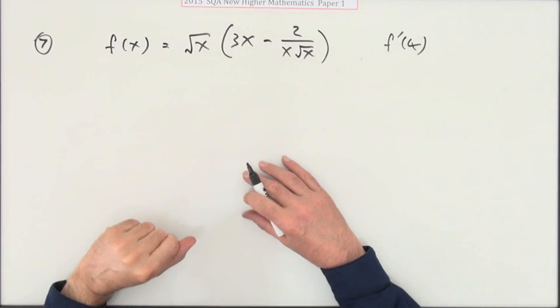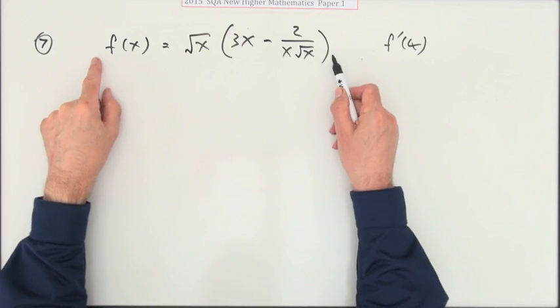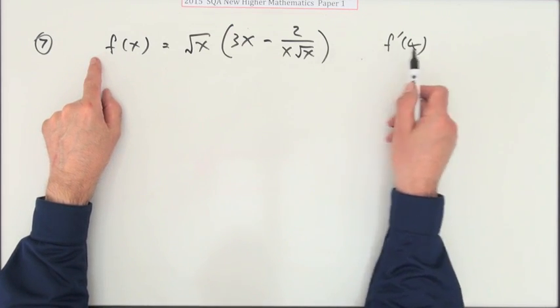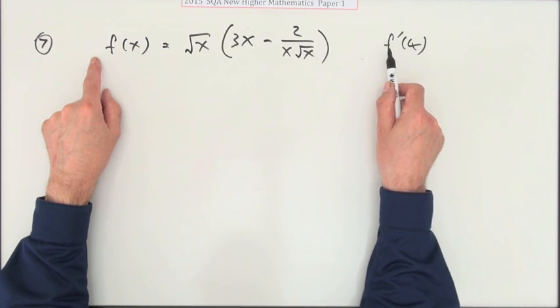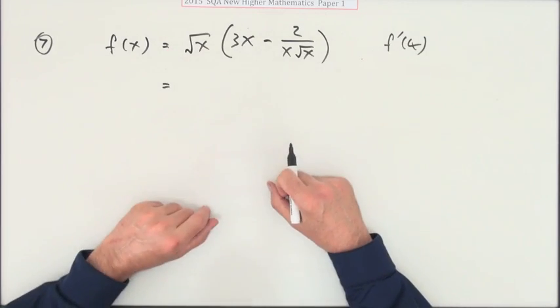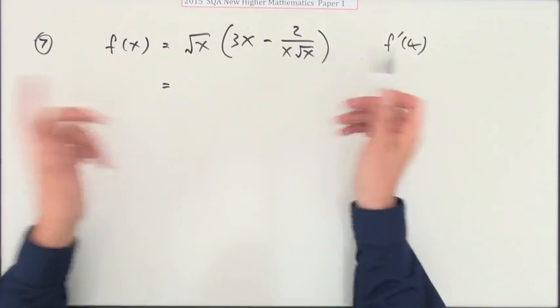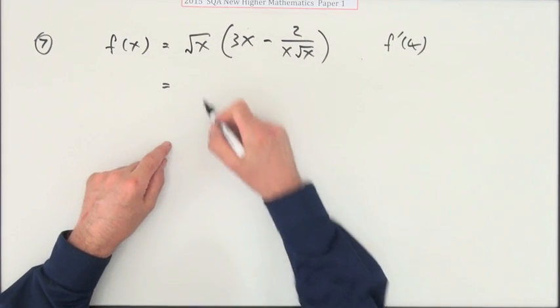Number seven from paper one of the 2015 new higher: given this function, find the value of the derivative of the function at four. Well, the first thing I have to do is multiply out the brackets. You can see that's power half, and some of these things will cancel.